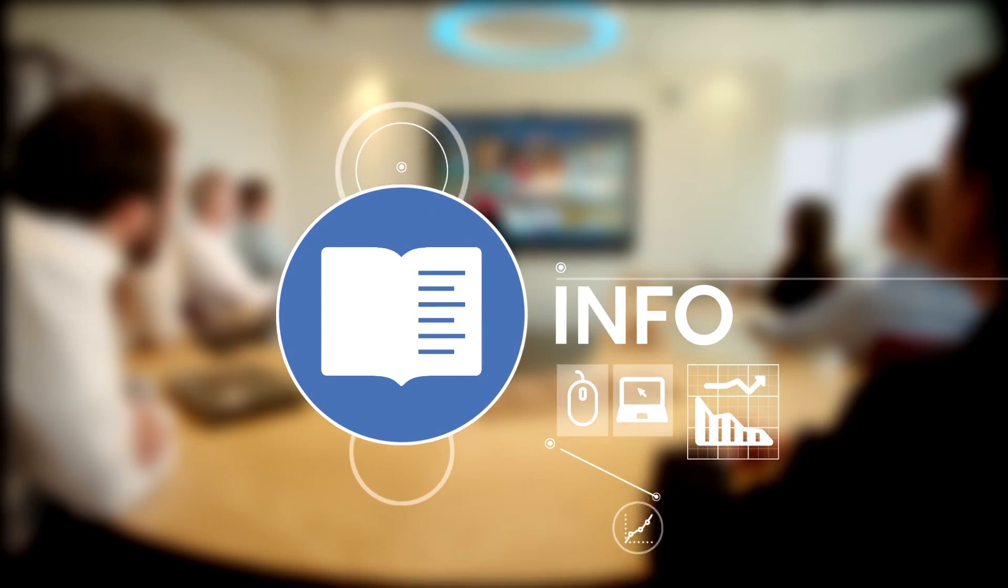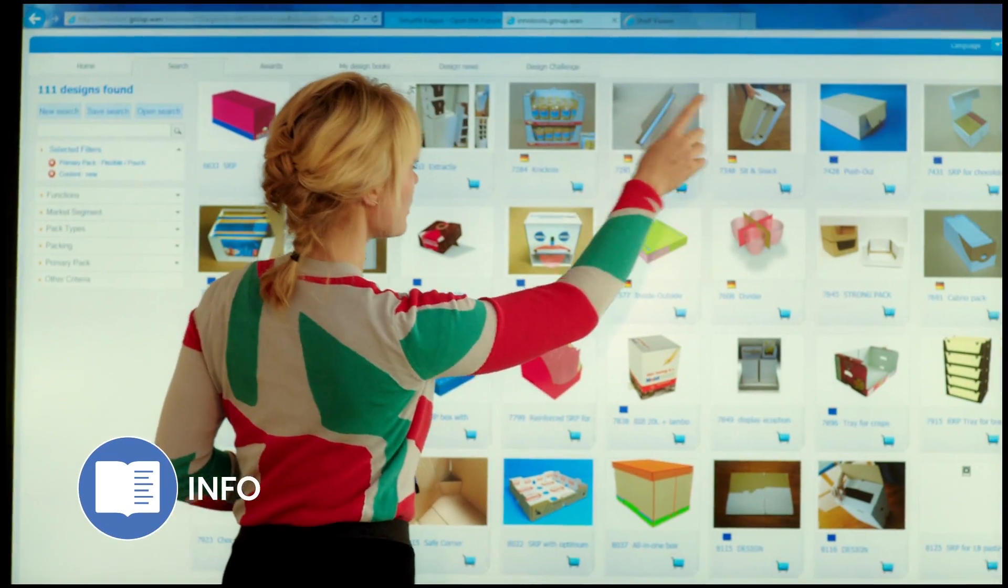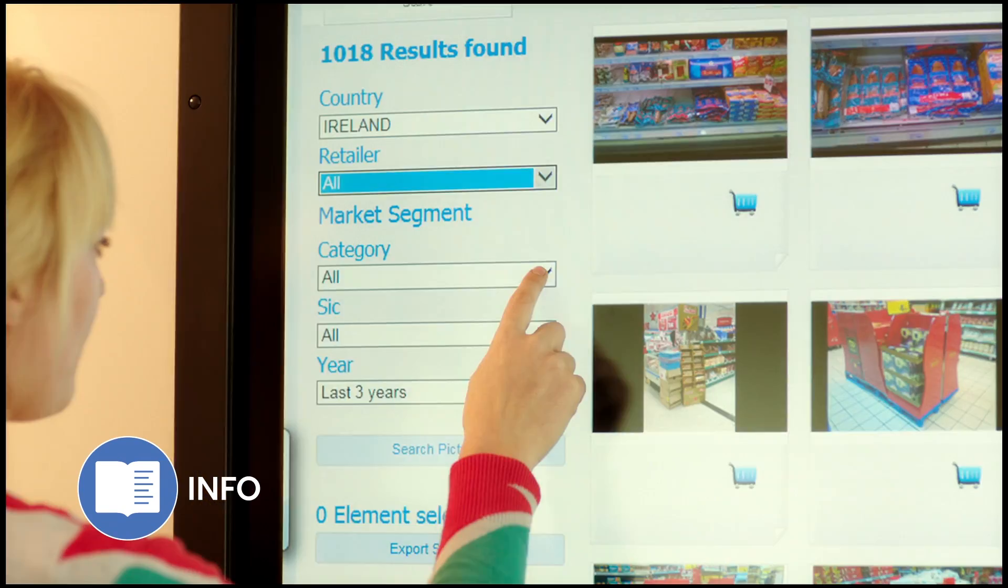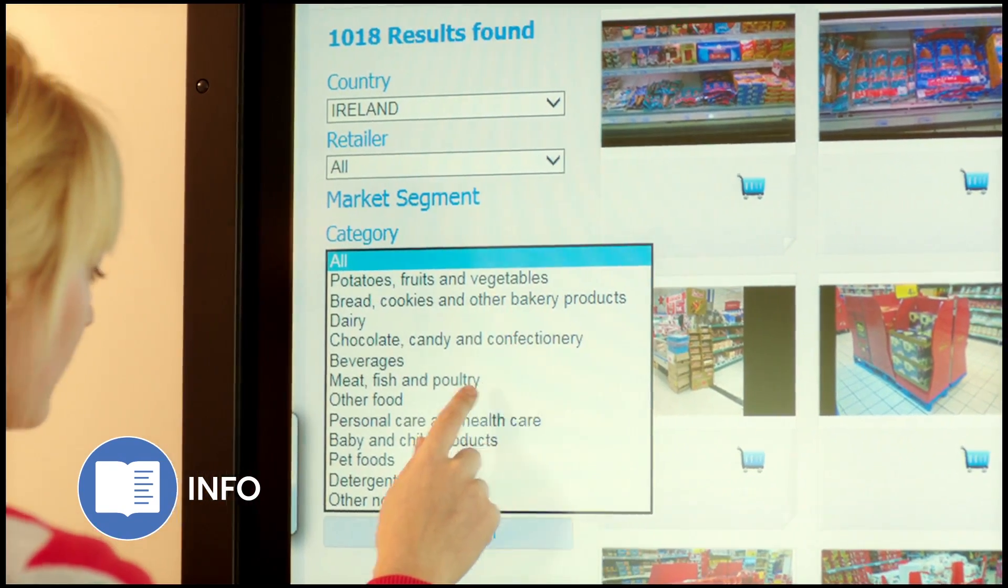Then our market-leading ShelfViewer tool compares the positioning and merchandising of your brand against up to 22,000 other products and placements.